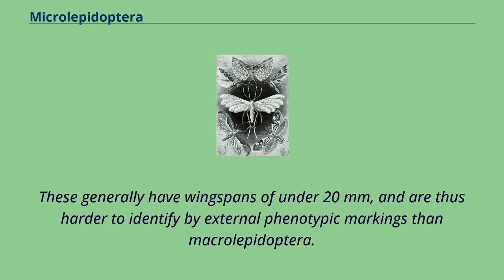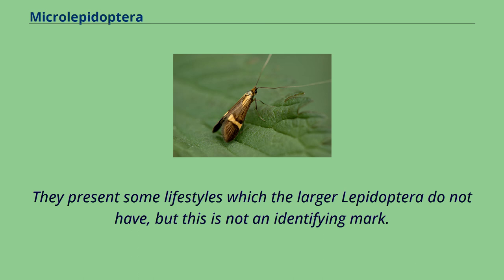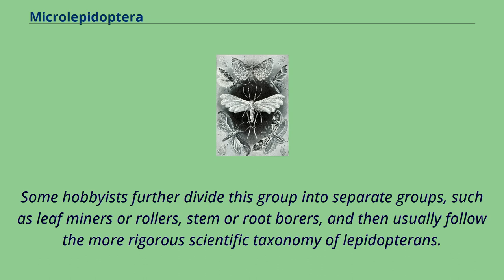These generally have wingspans of under 20 mm, and are thus harder to identify by external phenotypic markings than macrolepidoptera. They present some lifestyles which the larger lepidoptera do not have, but this is not an identifying mark. Some hobbyists further divide this group into separate groups, such as leaf miners or rollers, stem or root borers, and then usually follow the more rigorous scientific taxonomy of lepidopterans.